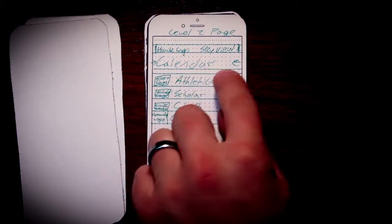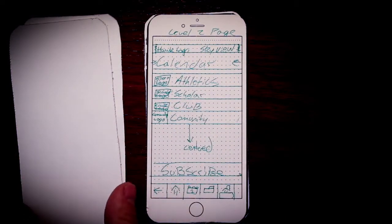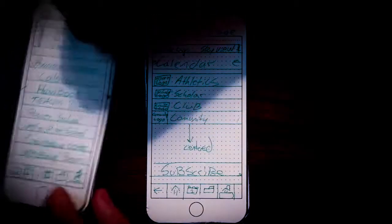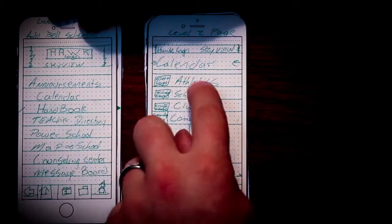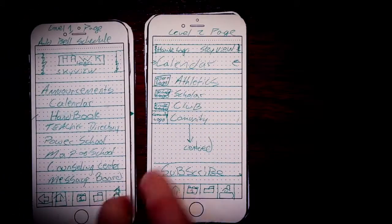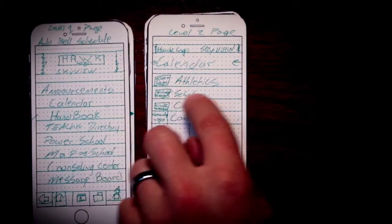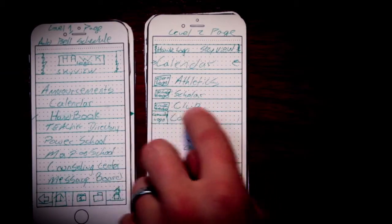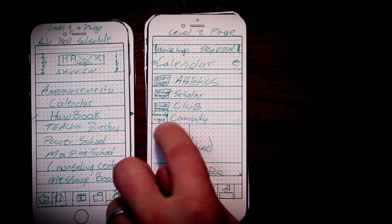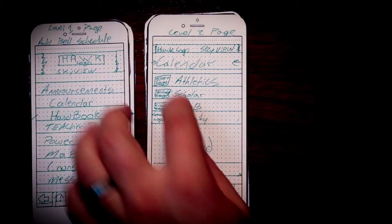So this looks at the calendar. So from the homepage, we would hit the calendar button here. And it would open to this page. And then there's a spot here for a sports logo for athletics, a logo for the scholars, a logo for a club, and a logo for the community. We'd center those buttons in the middle.